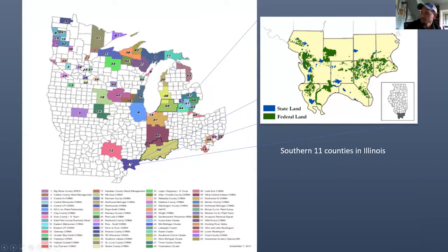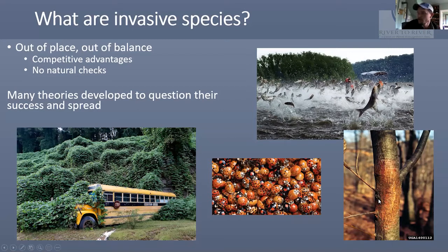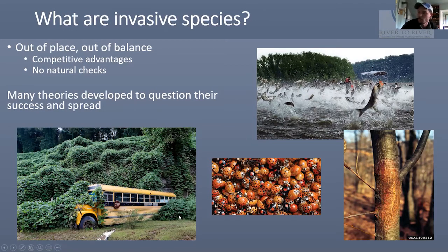For those unaware of what invasive species are: these are plants and animals that are out of place and out of balance. They've come here with some sort of competitive advantage and don't have any natural checks. It's not just plants - there are also insects, fungal pathogens, fish, and animals. There are many theories about how they are able to spread.